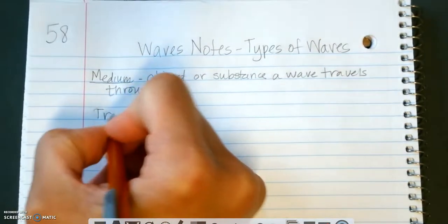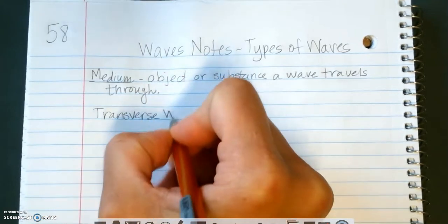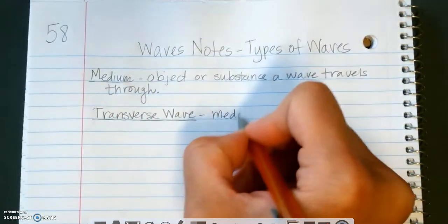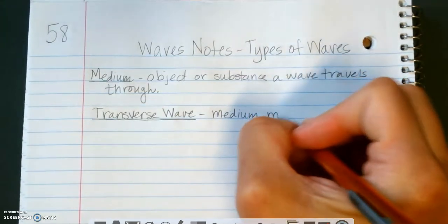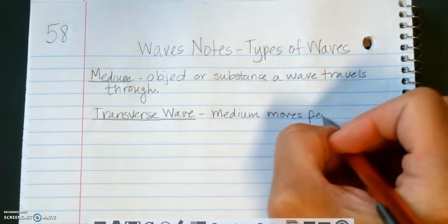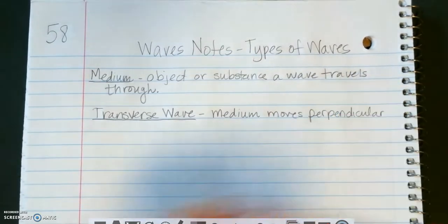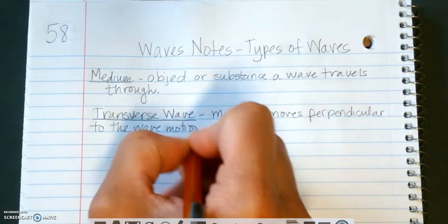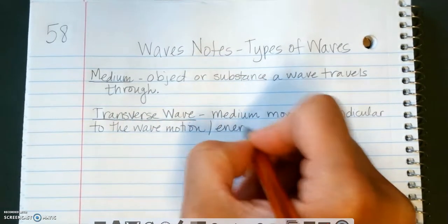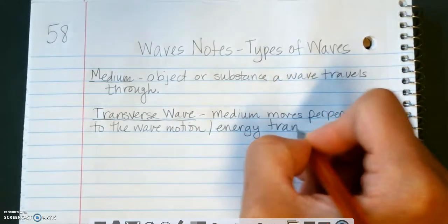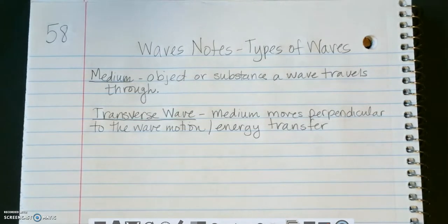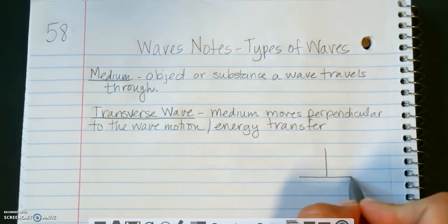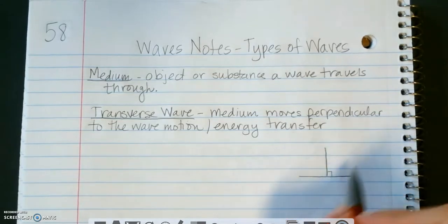Okay, so the first type of wave we're going to talk about is called a transverse wave. So a transverse wave is where the medium, so now we're talking about what it travels through. So the medium moves perpendicular to the wave motion slash energy transfer. So remember, perpendicular means that the objects are going to go in opposite directions, making right angles to each other. So this is what perpendicular means.